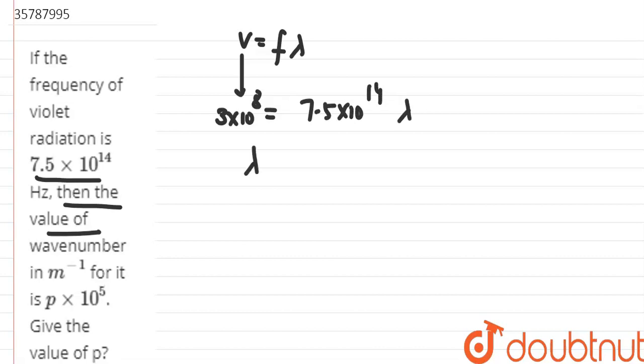So we need to find lambda. Lambda equals 3 × 10⁸ divided by 7.5 × 10¹⁴. This gives us 30 divided by 75 times 10⁻⁶.